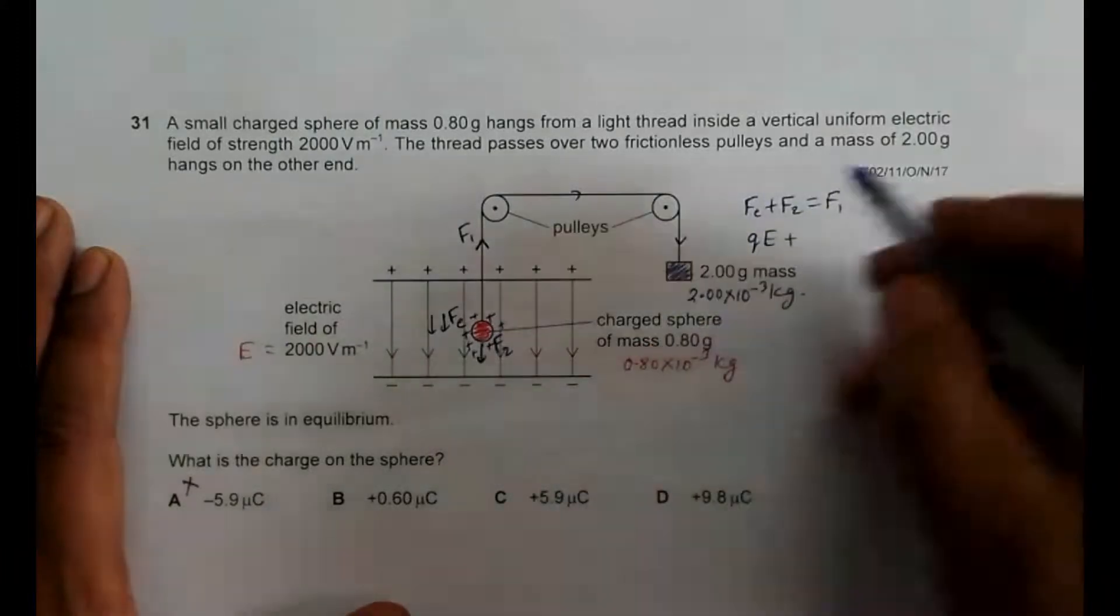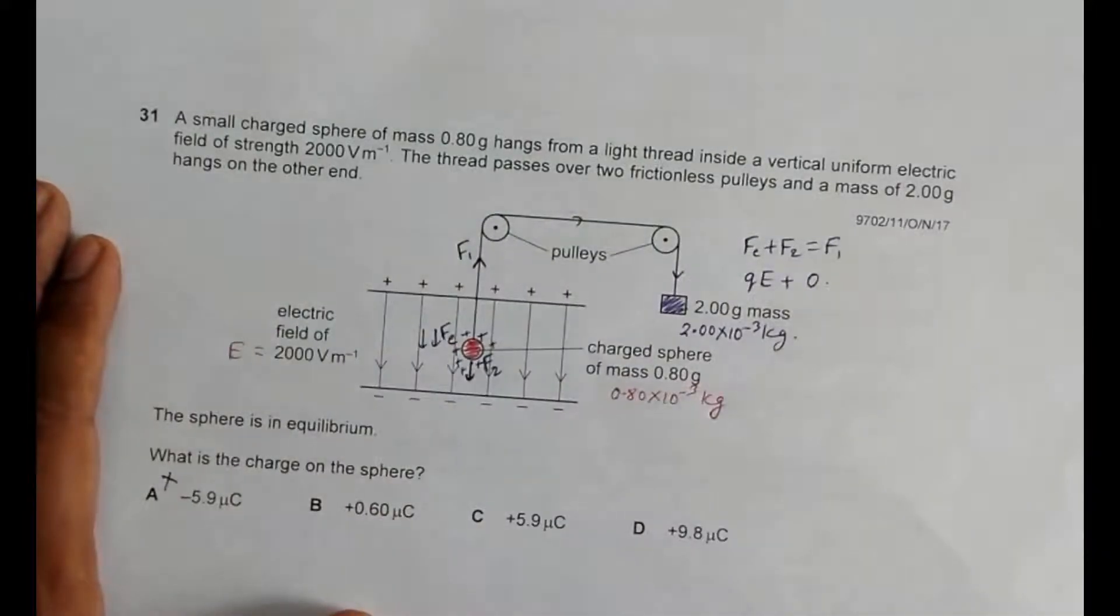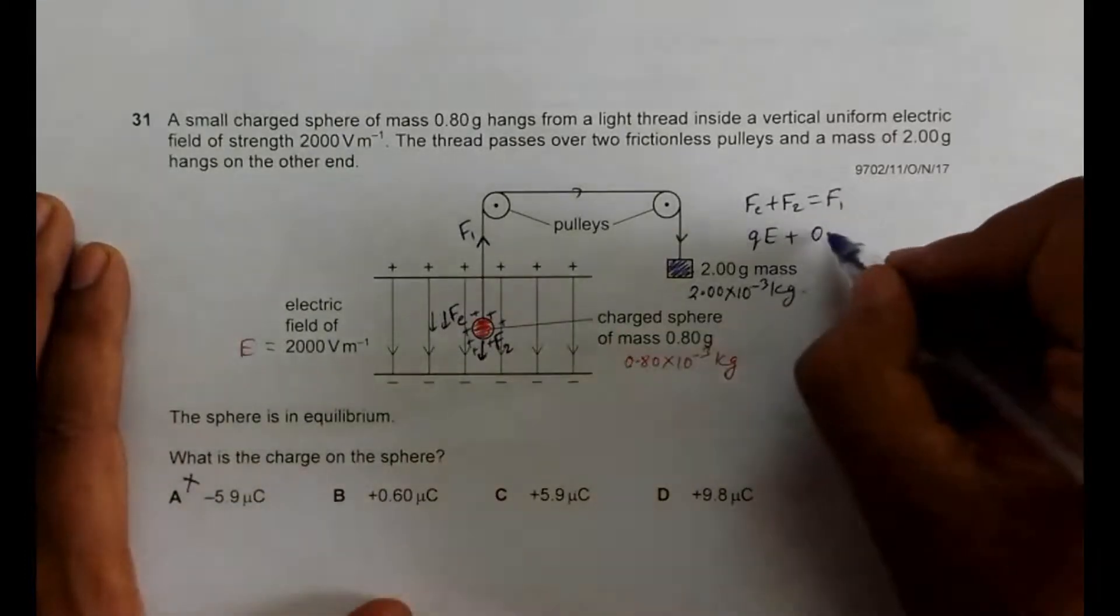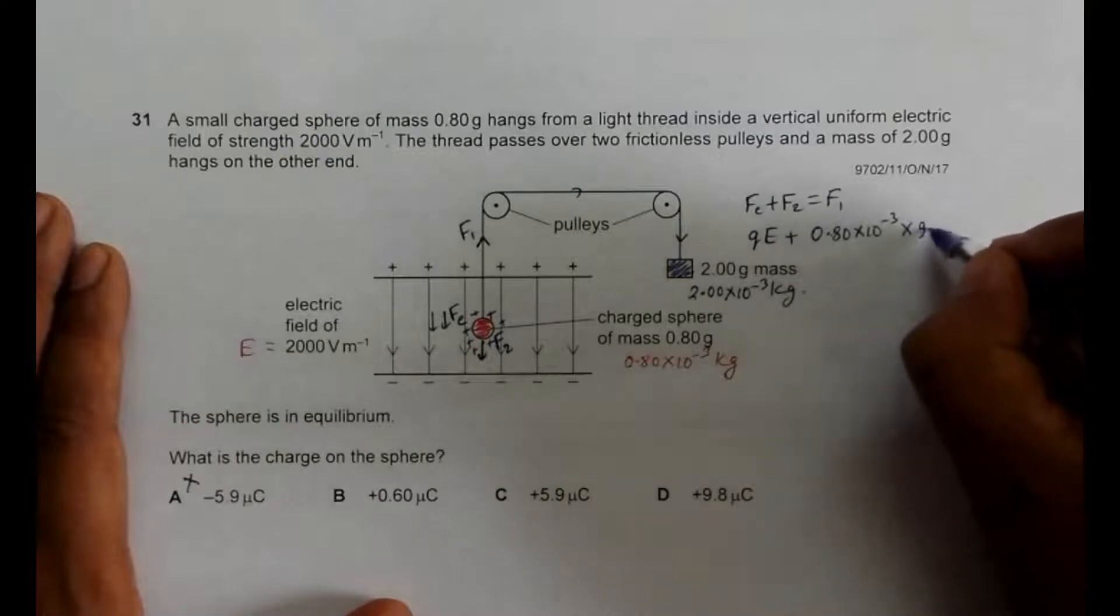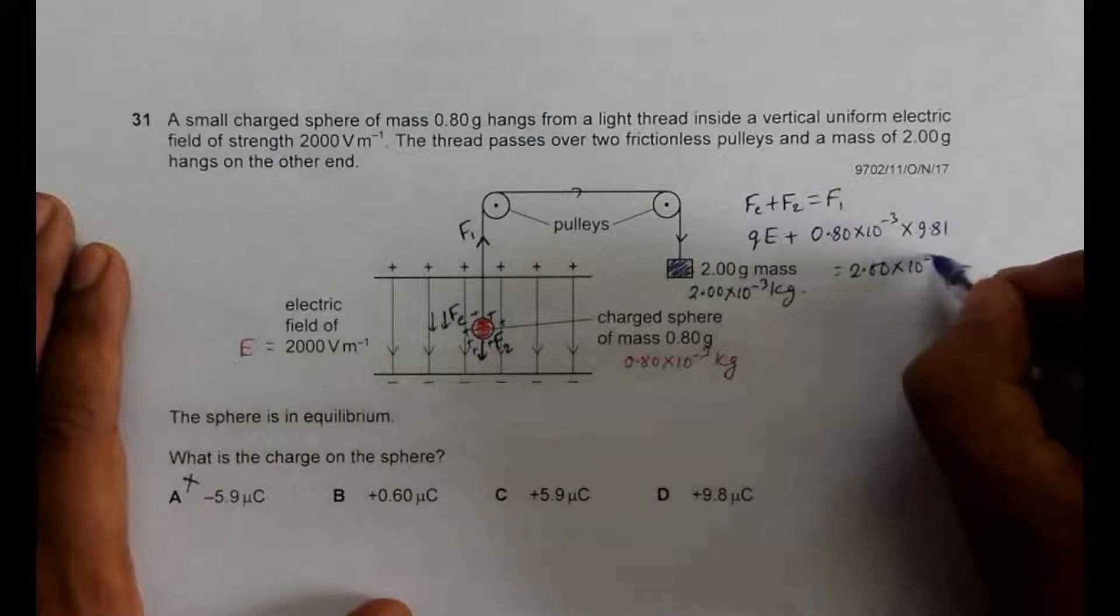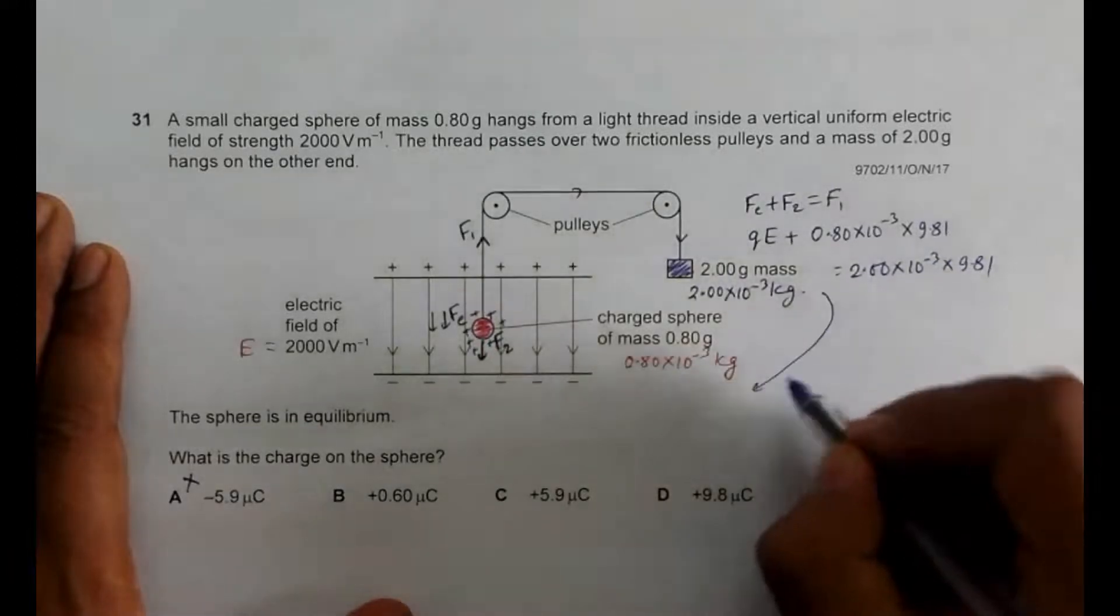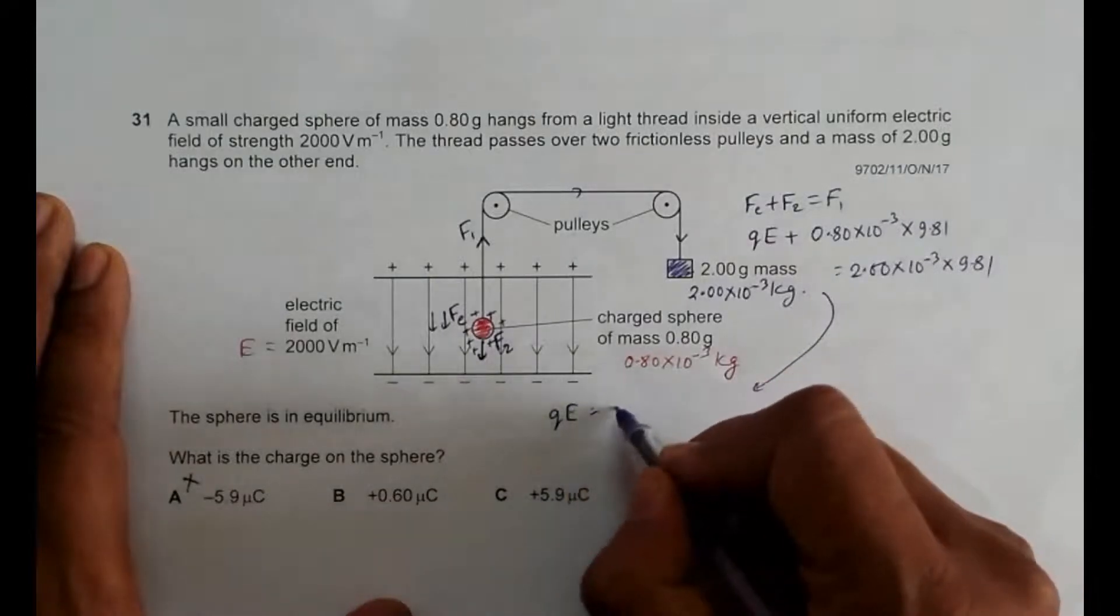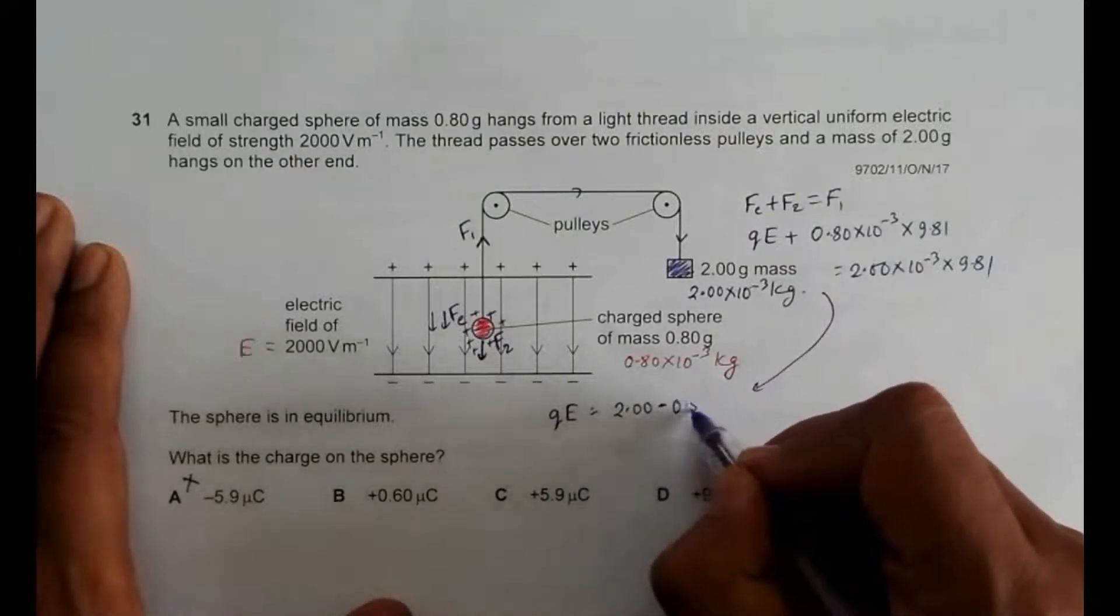the weight of this body, which is 0.80 into 10 to the power minus 3 into 9.81, equal to 2.00 into 10 to the power minus 3 into 9.81. So this will give me Q into E is equal to 2.00 minus 0.80 into 10 to the power minus 3 into 9.81.